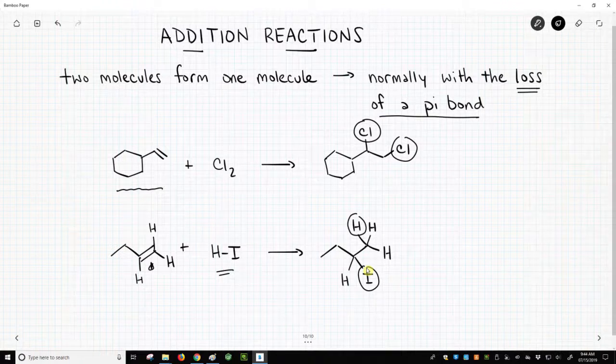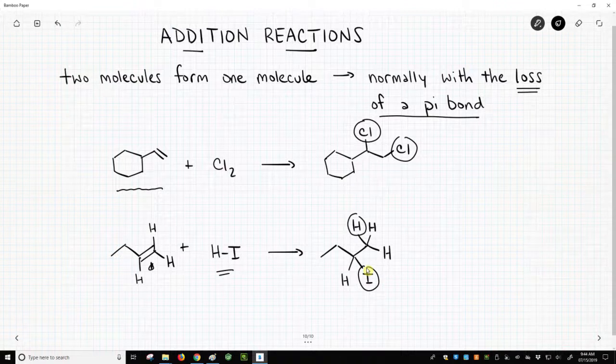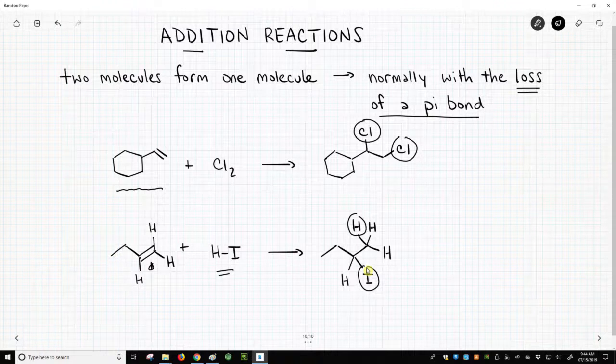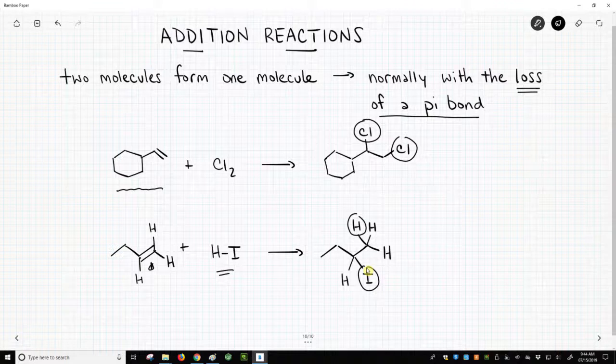Now the pi bond doesn't have to be a carbon-carbon pi bond. It could be a carbon-oxygen pi bond, carbon-nitrogen pi bond, but it's almost always going to be a pi bond that is broken and replaced by sigma bonds. So this is what an addition reaction is, and this is how we recognize it. We look for the loss of pi bonds in our reactions.